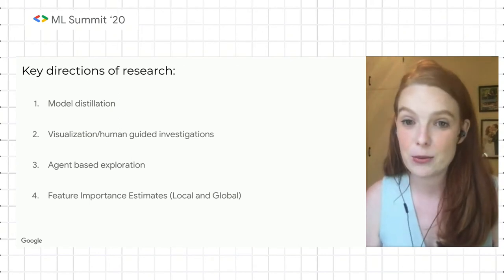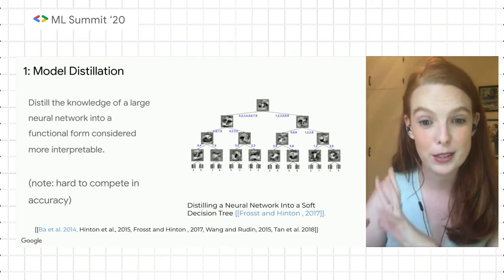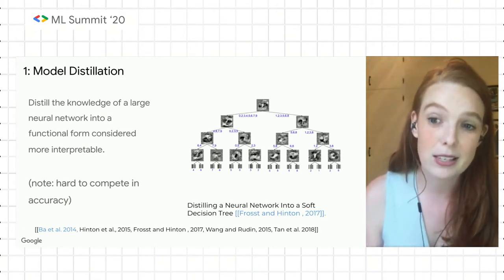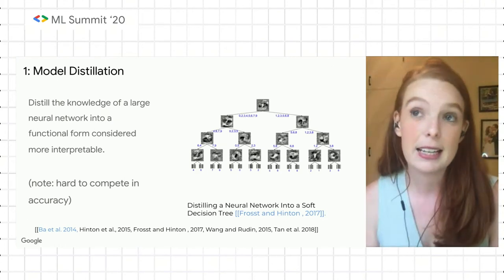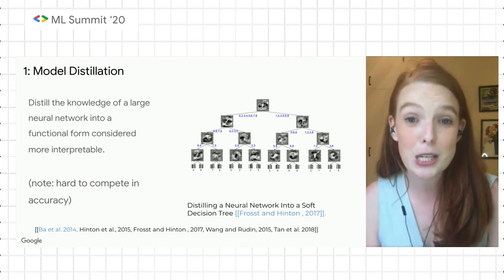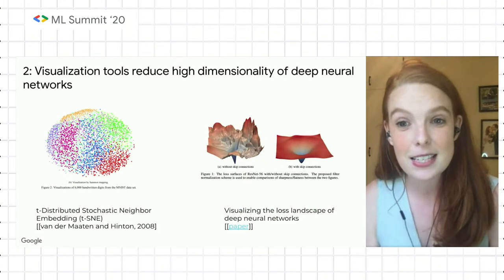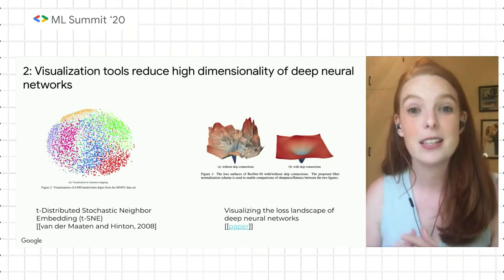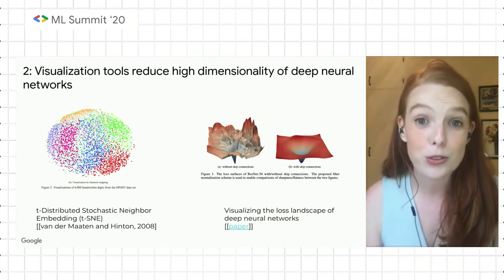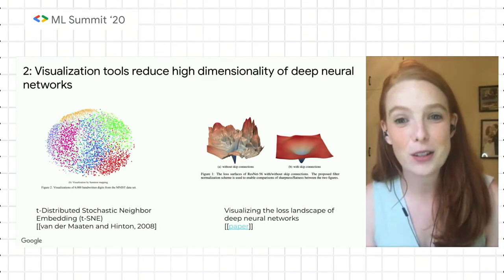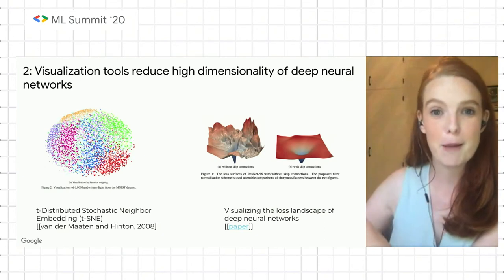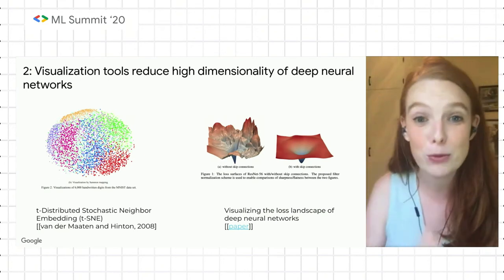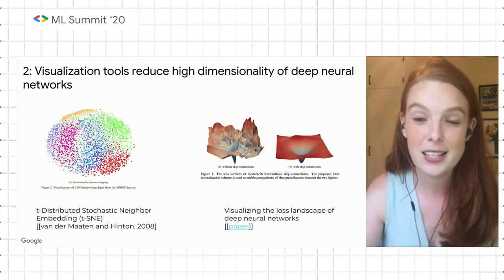To give you some context about the key directions of research, I'm going to talk about four. One is model distillation, where you take a much larger model and you teach a student model — trying to impart performance as well as reduce the complexity with the goal that perhaps it's a more interpretable form. It's a tricky research direction because empirically you tend to give up some performance. The second is visualization tools that reduce the high dimensionality of deep neural networks and empower the end user to navigate these high-dimensional spaces. Humans typically struggle to visualize beyond two dimensions, and so a lot of what these tools try to do is take this high-dimensional space and map it back into two dimensions in a way that preserves the integrity of what it's mapping.